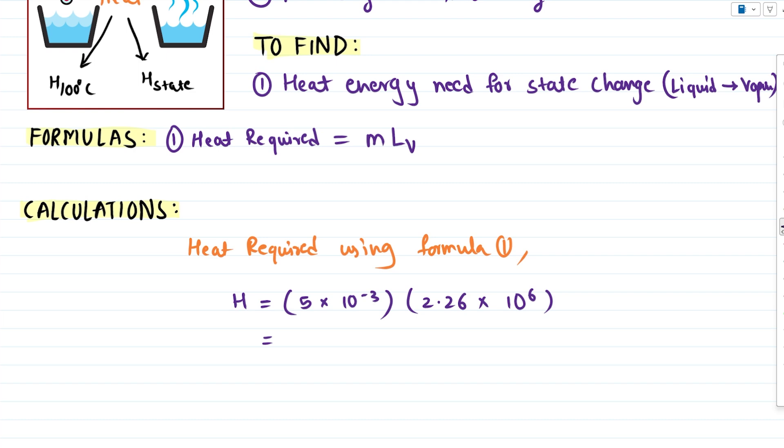So 10 raised to minus 3 into 10 raised to 6 gives us 10 raised to 3. And 5 into 2.26 will give us 11.3. So we will simplify this easily. So 1.13 into 10 raised to 4 we will get. And that is the heat required. And this heat unit will be joules because we are calculating in SI unit.